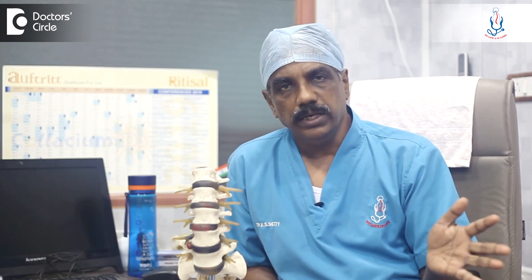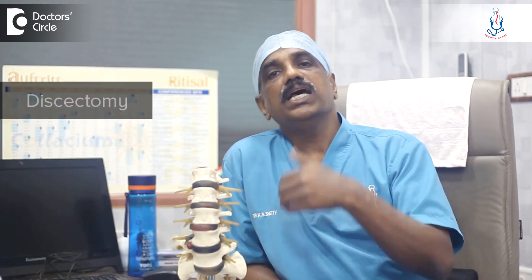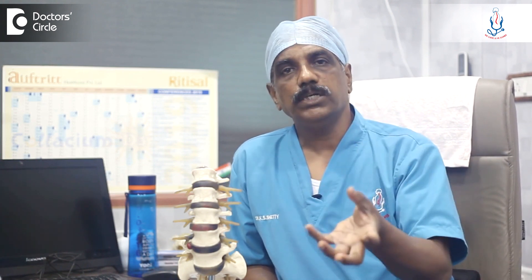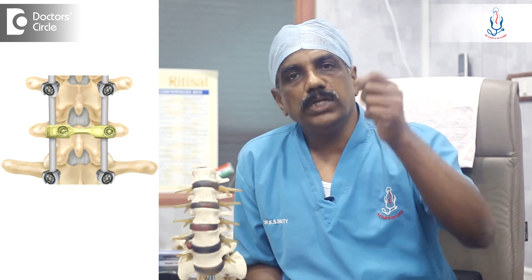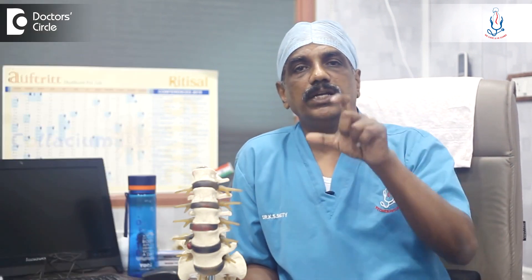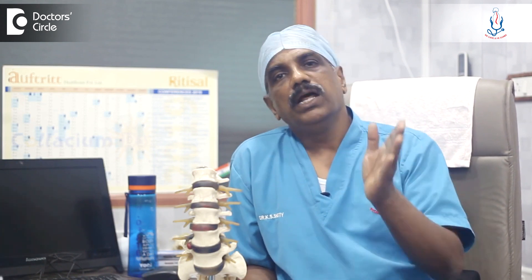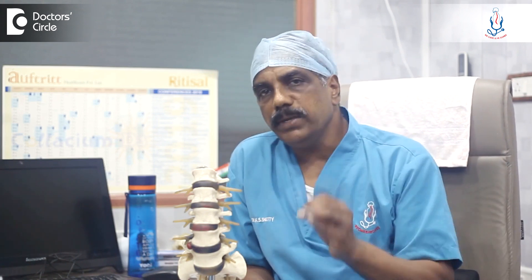Surgery is mainly of two types. One is removal of the disc and freeing the nerve, which we call discectomy. The other is stabilization surgery — if there is instability of the spine, we go for implant fixation with screws and rods to fix the unstable segment, called fusion surgery. These are the two major types of surgery, whether for the neck or lower back.